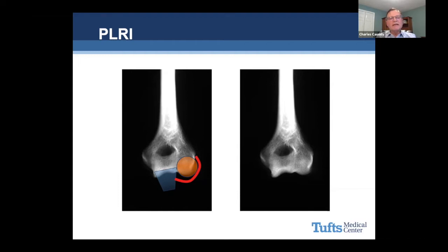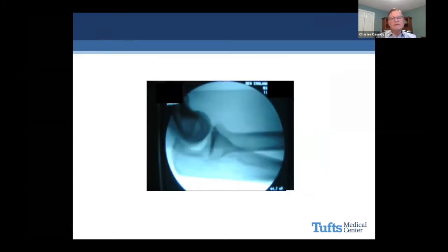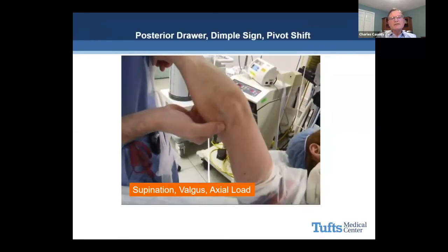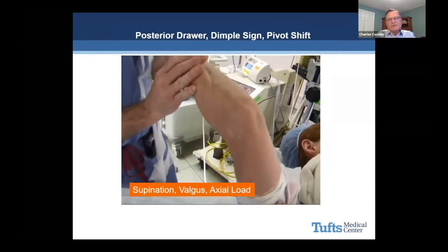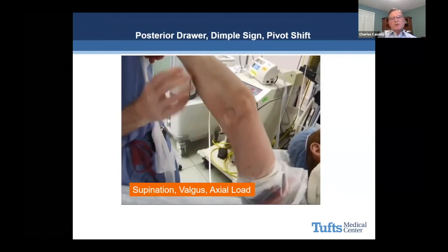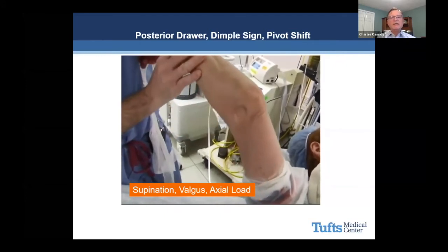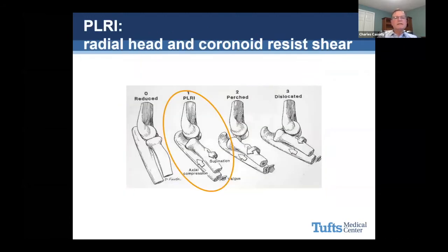With posterolateral instability, the forearm hypersupinates and drops out, and the radial head slides out from under the capitellum. In fluoroscopy, you can see the radial head sliding out with the posterior drawer. This patient is really unstable — you can see depigmentation from multiple steroid injections. That's a combination of a posterior drawer popping the radial head out, a dimple sign where you can see the hollow left from where the radial head should be, and then the pivot shift. In the spectrum of instability, the radial head slides out from underneath the capitellum and then the elbow dislocates fully.